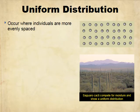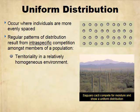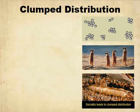Uniform distribution is where organisms are almost evenly spaced, and a lot of this has to do with intraspecific competition — that is, competition within the population. If you look at the picture of saguaro cacti, they compete for moisture. There's only going to be a certain amount of moisture in a certain area, so they need to be spaced out enough so they don't infringe on each other, while still maximizing the number in that area. Territoriality and autotoxicity play the same role.